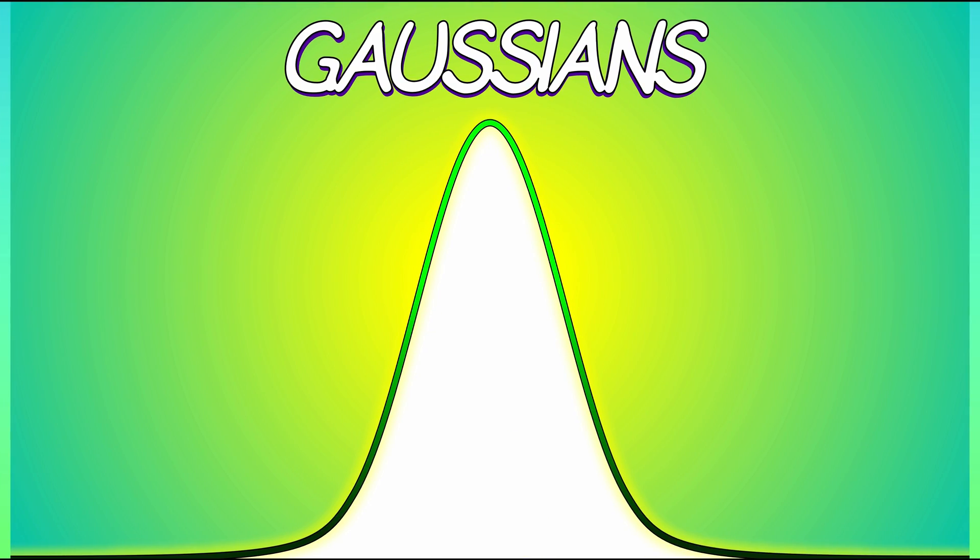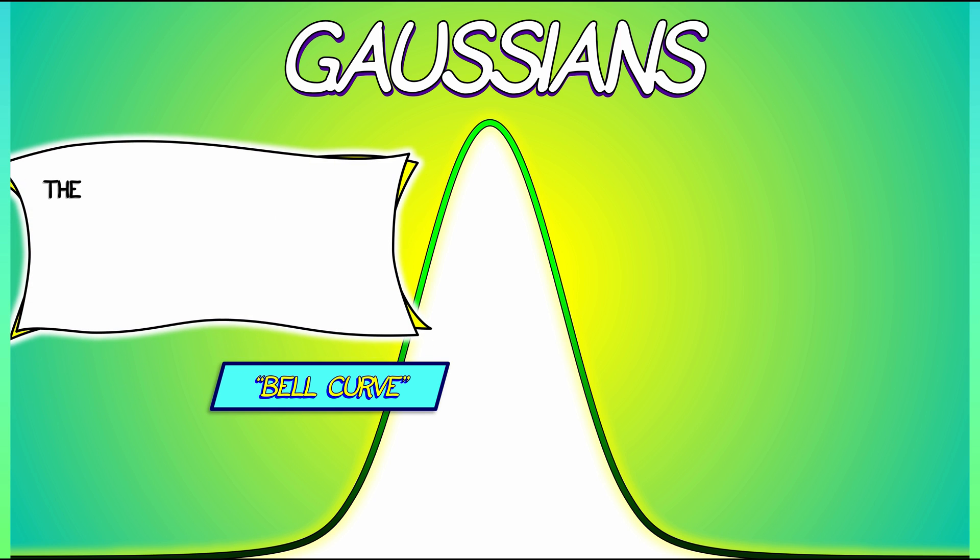First up, the Gaussians. These are also known as bell curves. You may have seen it under that guise before. The standard Gaussian has the formula 1 over square root of 2π times e to the minus x squared over 2. You see that exponential in there?